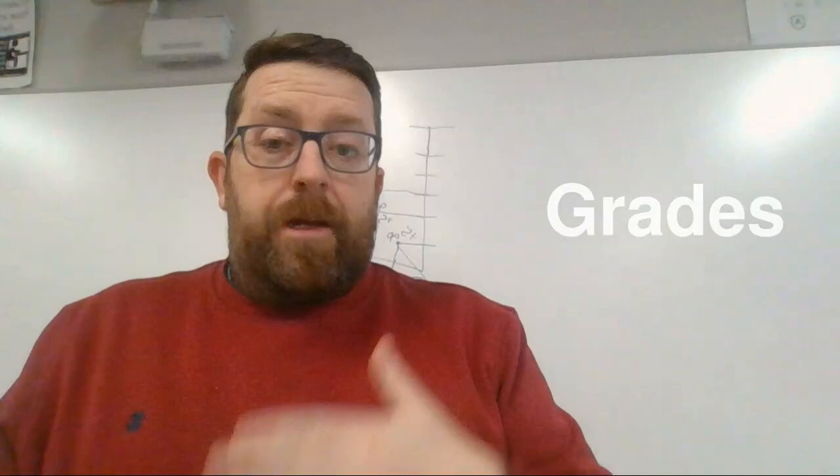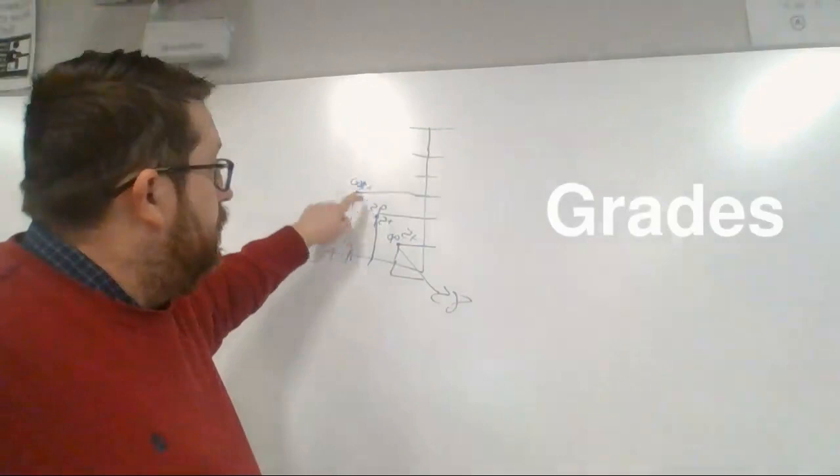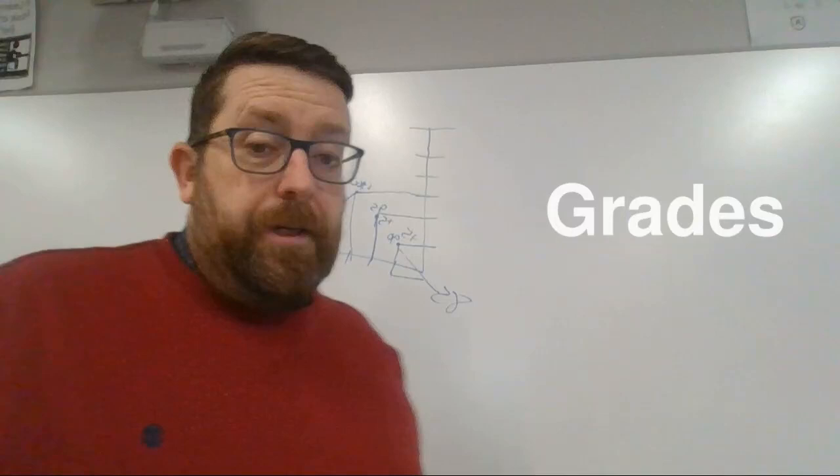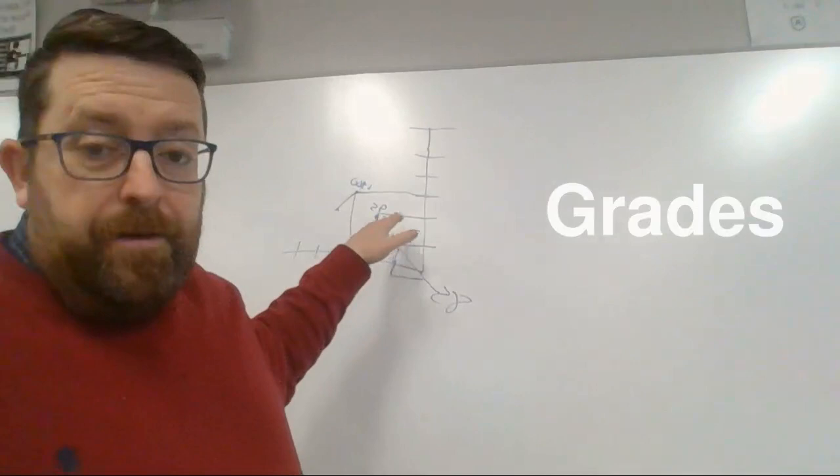projects. Unit projects are the thing that is going to shape your grade, because this is going to determine your letter grade, not your research credits. Your research credits are going to determine if you can complete these. Once you've accumulated enough research credits, you can work on the unit projects. And once you get the unit project in, if you pass it, you get those five points. If you miss it, you lose five points.